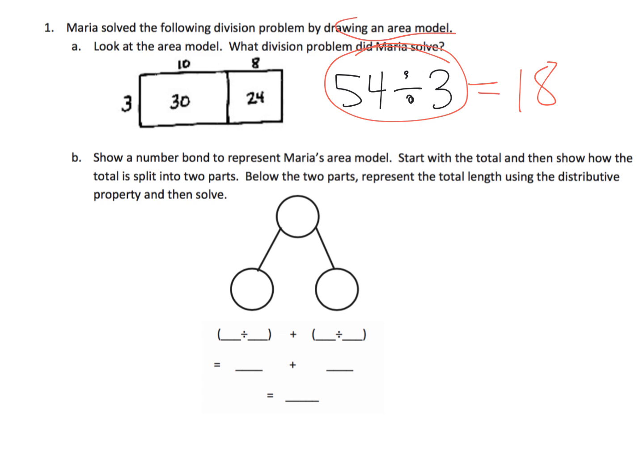Question B says we're supposed to use the number bond to represent what's going on. So let's do that. We're going to say 54 goes here, and we know that 30 and 24 go here. And then we've got 30 right here. 30 divided by 3 gives us 10, and 24 divided by 3 gives us 8.